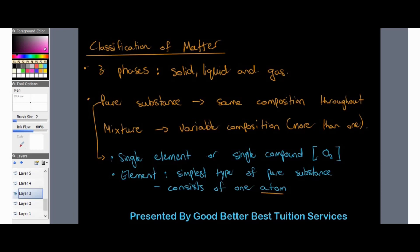A pure substance of the same composition throughout can comprise a single element or a single compound. For example, O₂ — which is the oxygen we breathe — is a diatomic molecule, meaning it cannot exist on its own; it bonds to another oxygen atom. An element is the simplest type of pure substance — it consists of only one type of atom.